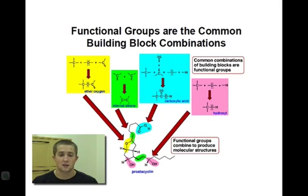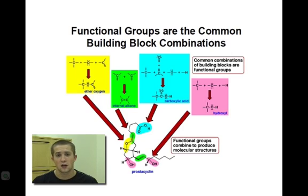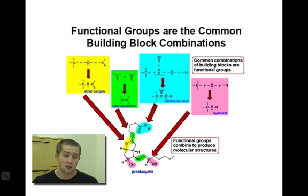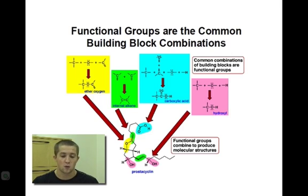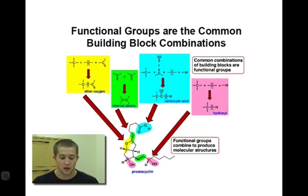Our path to interpreting organic structures is stepwise. We must first understand the organic building blocks, which can include an atom type, its connectedness, its molecular geometry, its charge, and so on. Next, we need to understand how these building blocks can combine to form functional groups, and once we're able to identify the various functional groups, we can understand how these functional groups and building blocks can all combine to form an organic molecule.